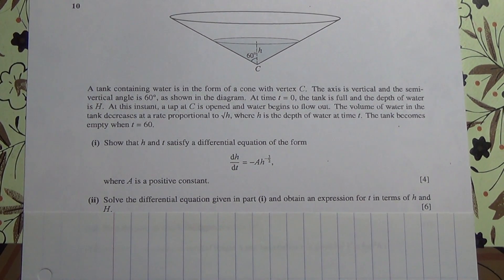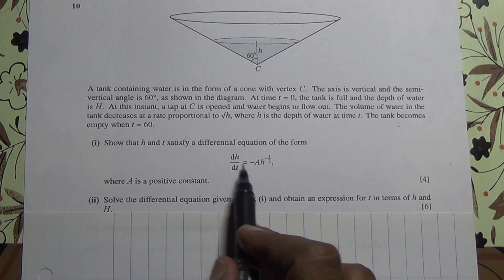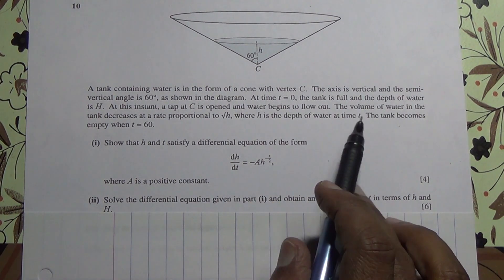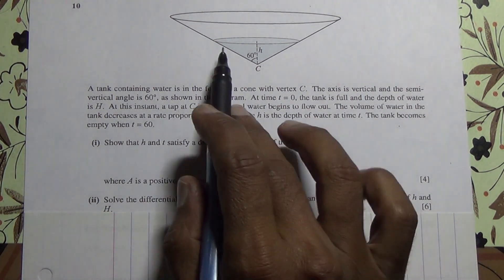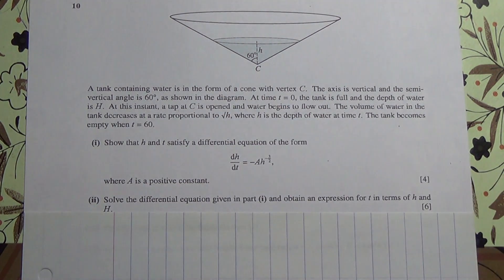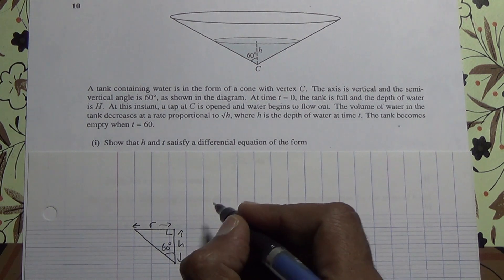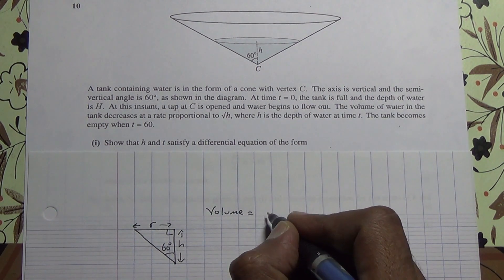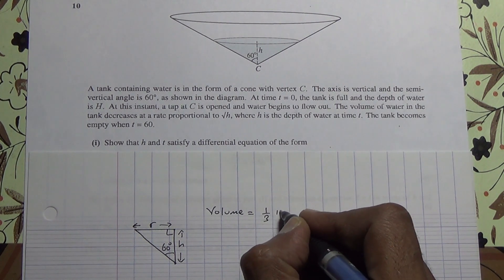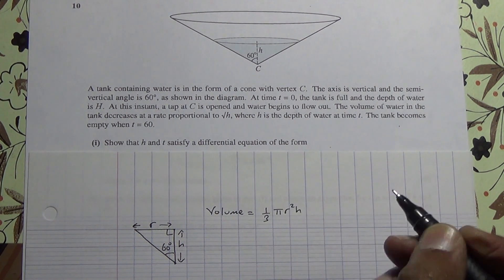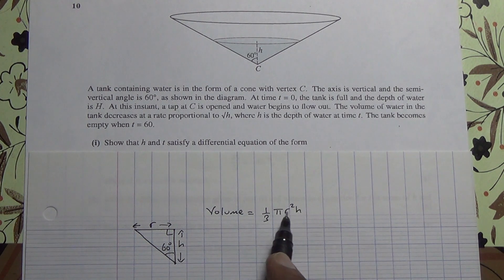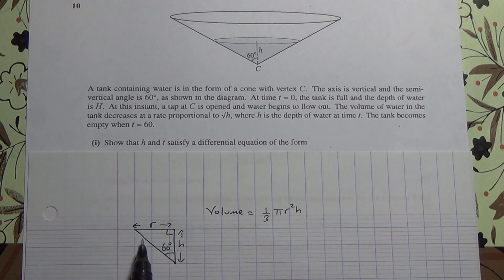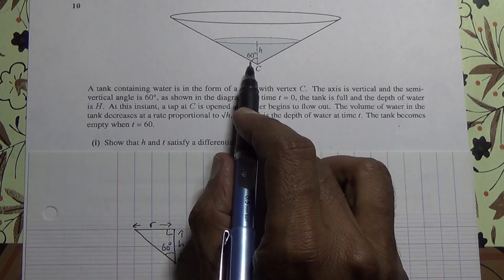So how are we going to tackle a question like this? To be able to prove this, first of all, the volume of water in the tank — the volume of a cone, or the volume of water here, is going to be equal to one-third pi r squared h. And of course, this r here is something that we need to find. This information has been given in the question: 60 degrees and h.